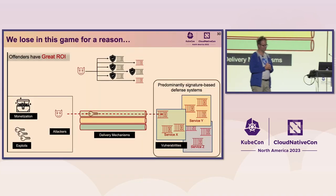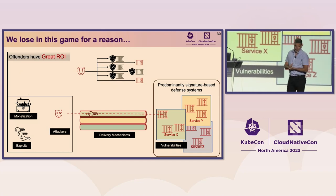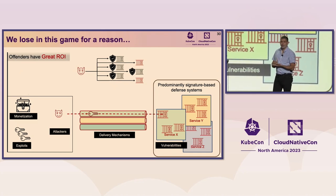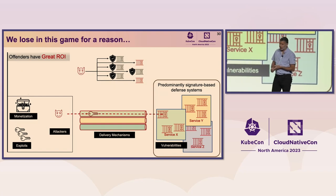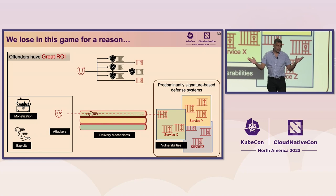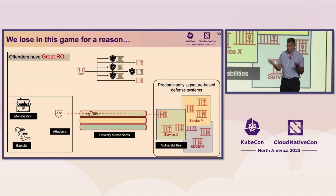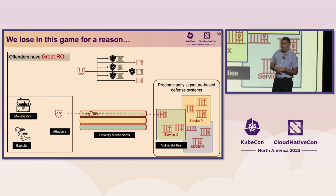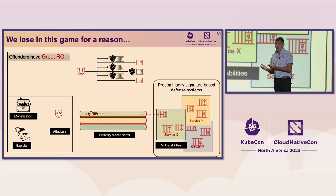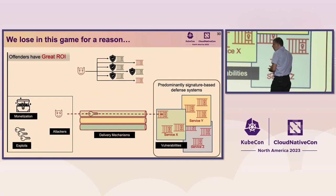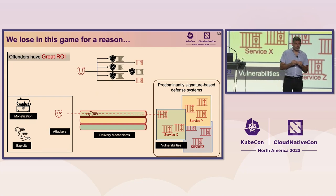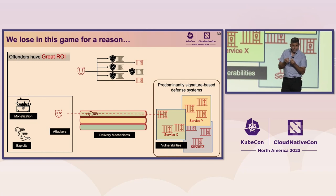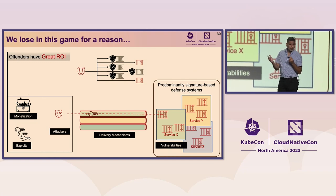To understand why the situation on the defense side is so dire, we need to see and understand the offender's ecosystem. Not only do offenders have access to all the vulnerabilities that we gladly publish, they also have available exploits for many of them — in source code. They can modify them, improve them, and morph them so they can evade our defenses.